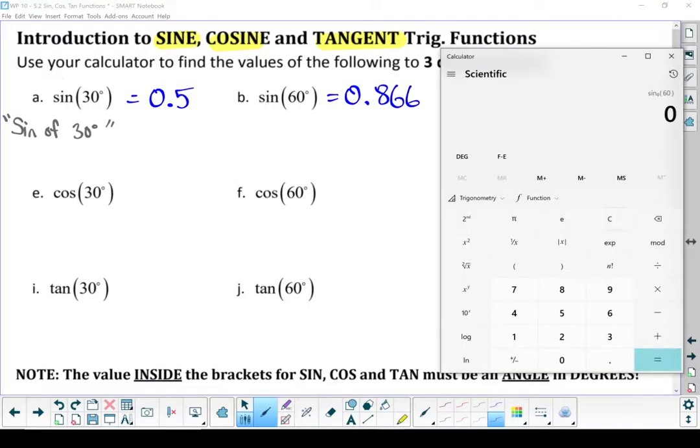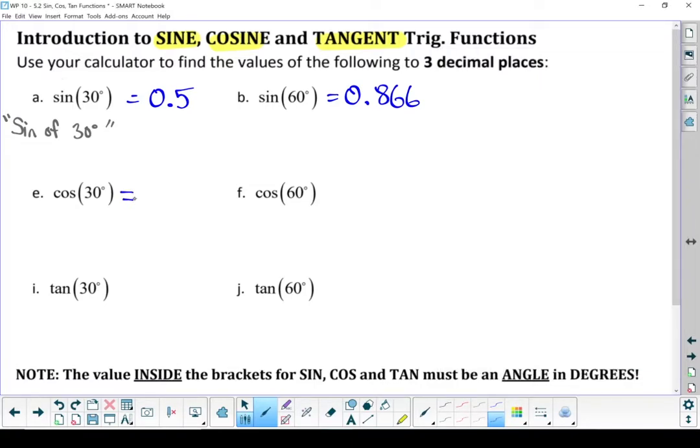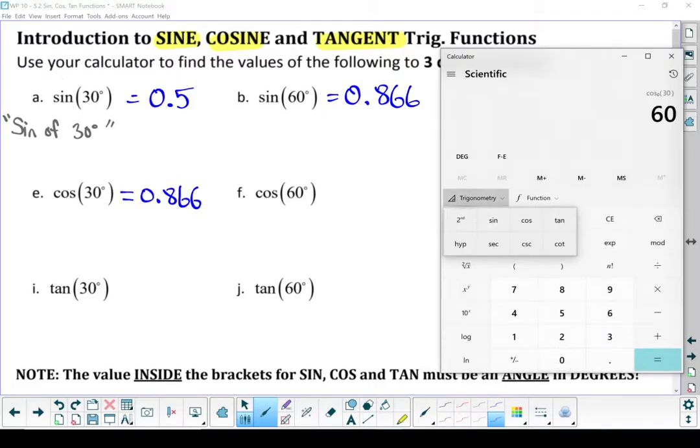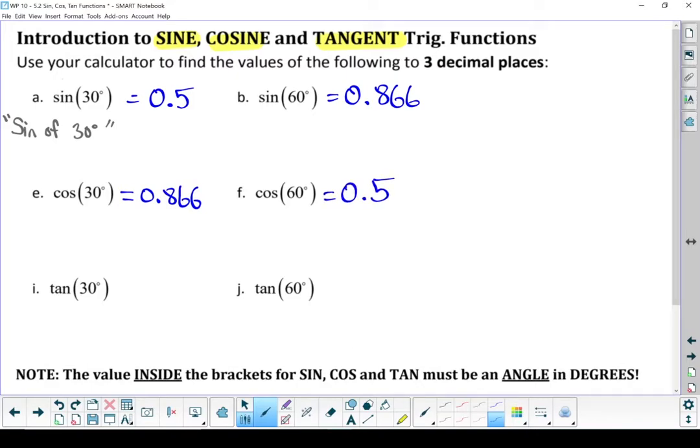Let's keep it going. Cos of 30 degrees. So 30 trig cos. Also 0.866. Cos of 60 degrees. 0.5. Jump down to tan.